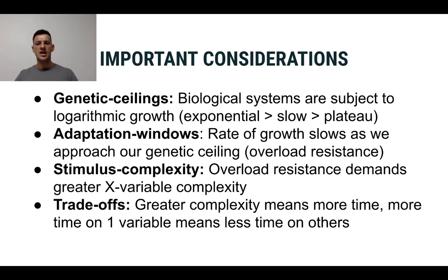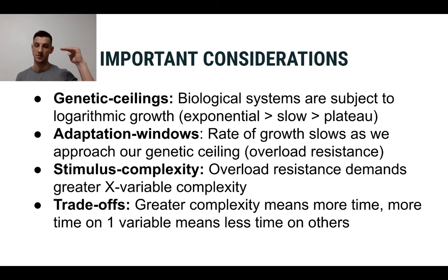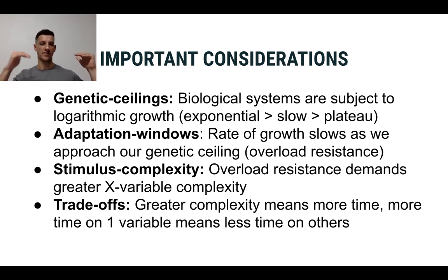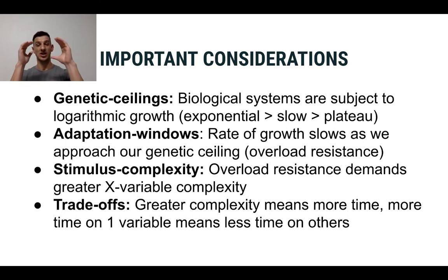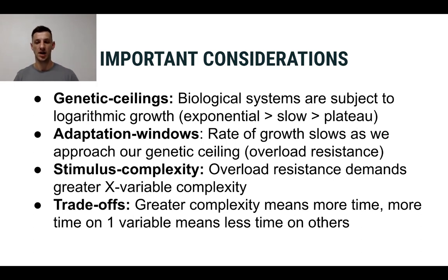This leads us to make certain trade-offs. We say, 'I'm not going to reach my genetic potential for this particular variable — let's say maximum strength.' But then I get to spend more time on other things like cardiovascular endurance or extreme flexibility. In some cases you can approximate your genetic potential for strength, flexibility, and endurance — but your whole life will probably have to revolve around exercise in order to do that.